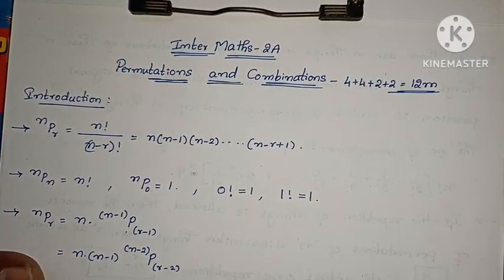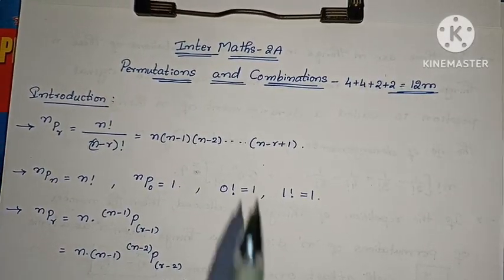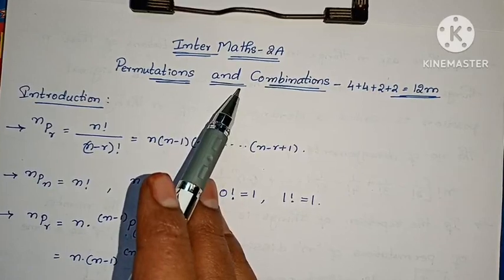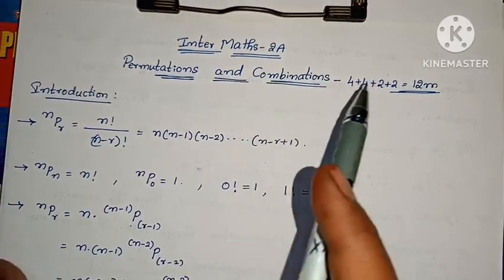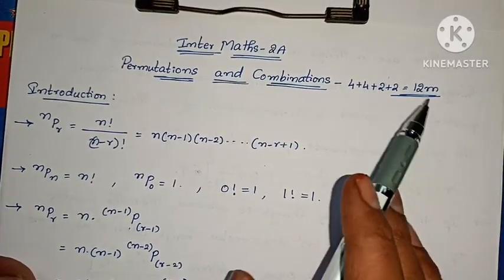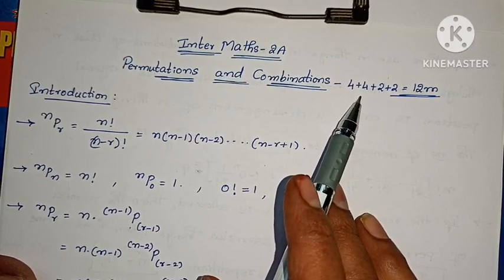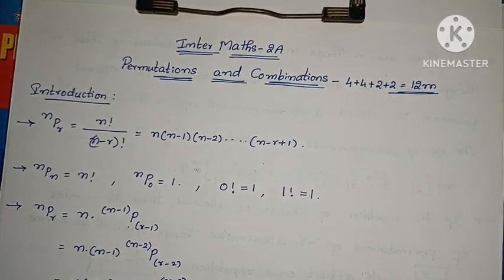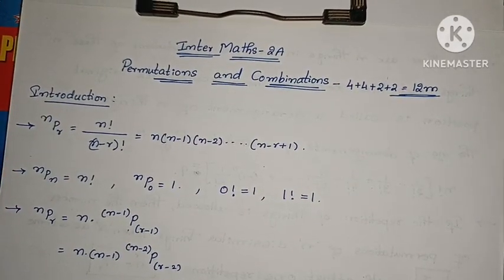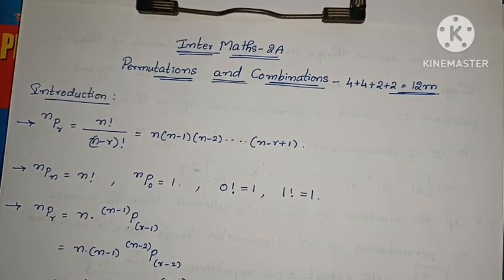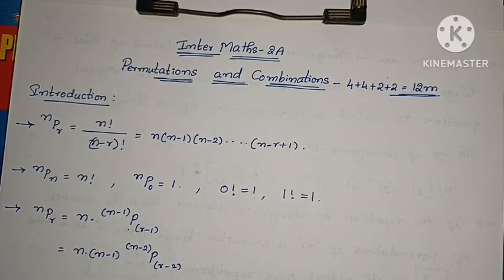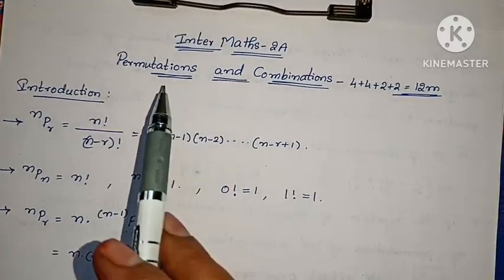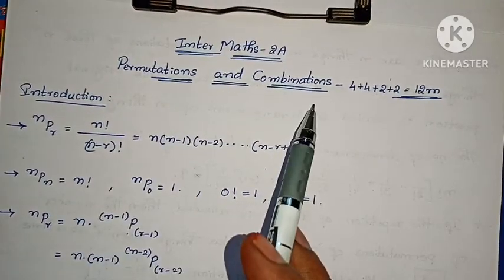Hi, welcome to Pernika Marks. In Marks 2, we will start the first chapter about Permutations and Combinations. Each chapter is about 12 marks. There are 4-mark problems and 2-mark problems. This chapter is very easy to solve. There are many problems that you can solve — 12 marks in total. Let's start the first part of Permutations and Combinations.